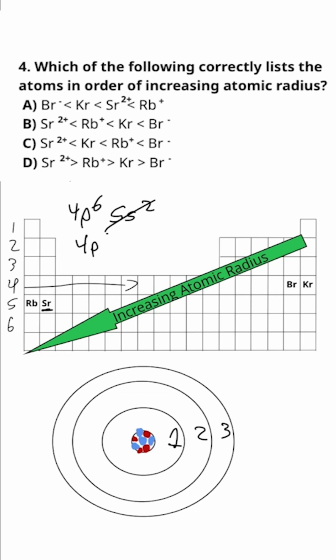A similar thing happens with rubidium, because normally it ends with 5s1, but that electron is gone because it has a plus one charge, so it's also 4p6.